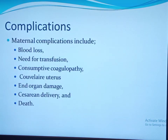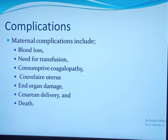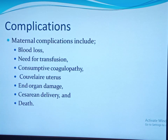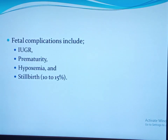Maternal complications of abruption include blood loss, consumptive coagulopathy, and Couvelaire uterus — also known as uteroplacental apoplexy — which is extravasation of blood into the myometrium and uterine serosa, most commonly recognized at cesarean delivery, causing significant uterine atony and postpartum hemorrhage. It is managed with uterotonic agents, with hysterectomy reserved for non-responsive cases. Acute kidney injury can occur, especially with concomitant placenta previa, due to DIC and hemorrhage. The cesarean delivery rate is high. Fetal complications include IUGR, prematurity (40 to 60 percent of abruptions occur before 37 weeks), hypoxia, and stillbirth.